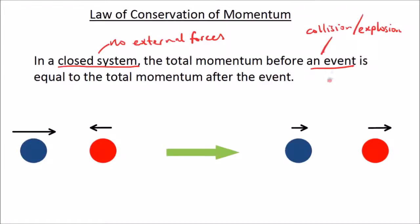An event could be a collision or it could be an explosion. So the total momentum before a collision or an explosion is equal to the total momentum after that collision or explosion. We're going to go through an example of a collision and an example of an explosion and work through each problem mathematically.